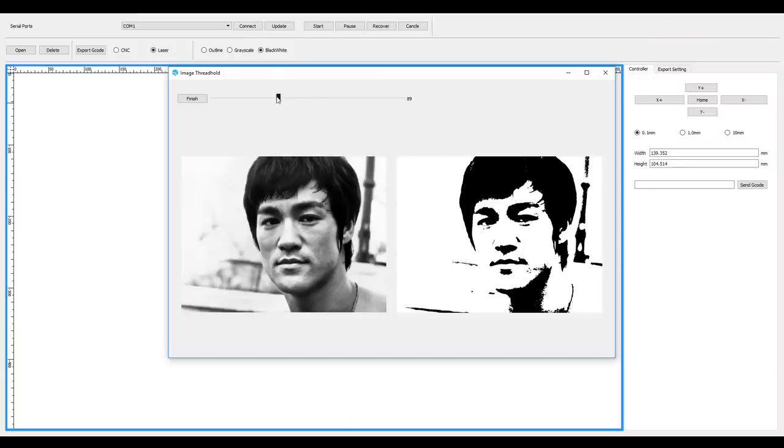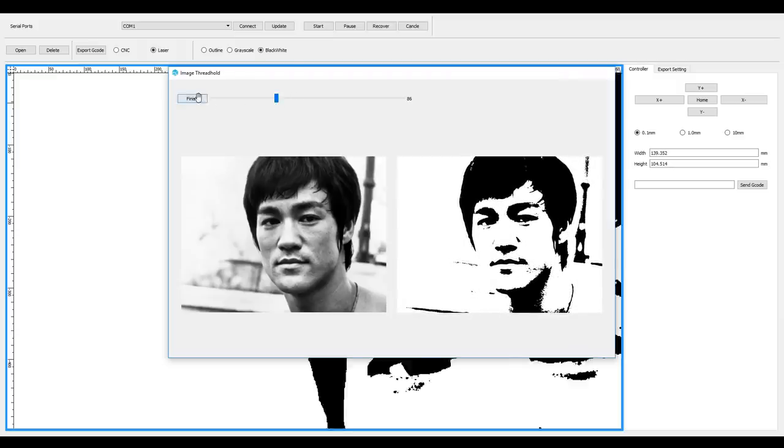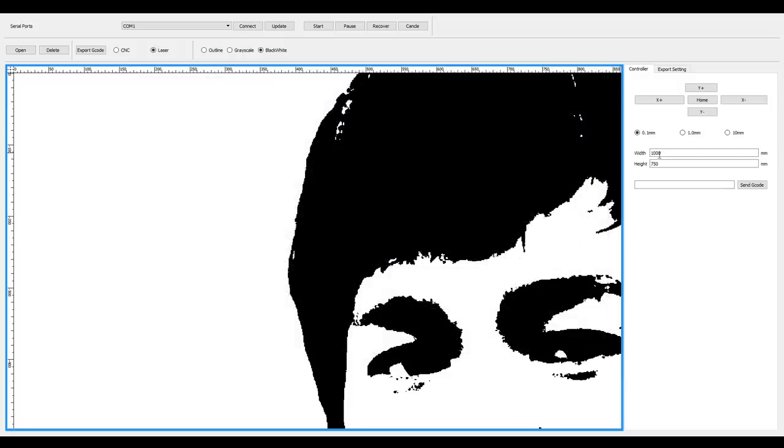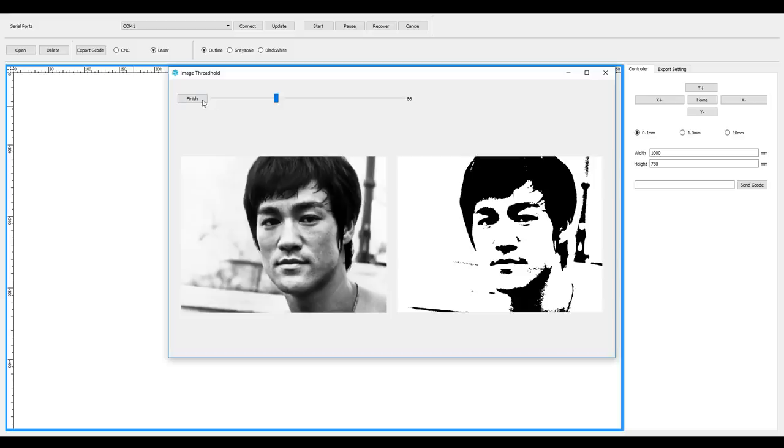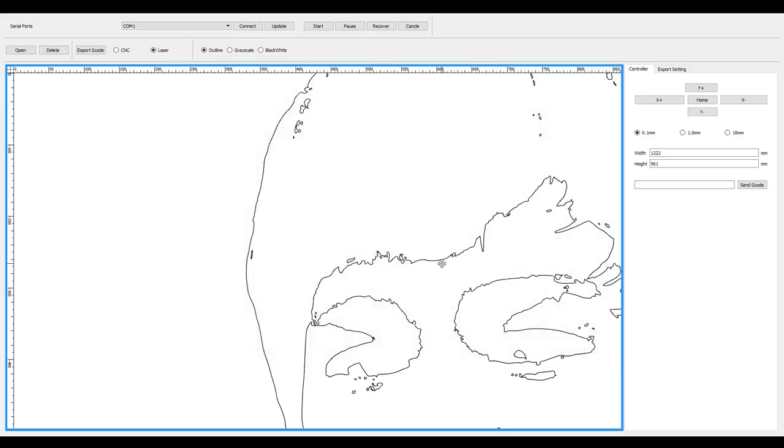The Creality Workshop software was just as easy to use as the 3D printing slicer. With laser, and in this case black and white selected, we pick a JPEG and then adjust the slider until we get the desired contrast. The images seem to import way too large, but we'll adjust that soon. We also have an outline mode which traces the preview on screen.